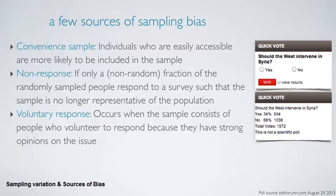To recap, the difference between voluntary response bias and non-response bias is that in non-response there is a random sample that is surveyed, but the people who choose to respond are not representative of the sample, while in voluntary response there is no initial random sample.